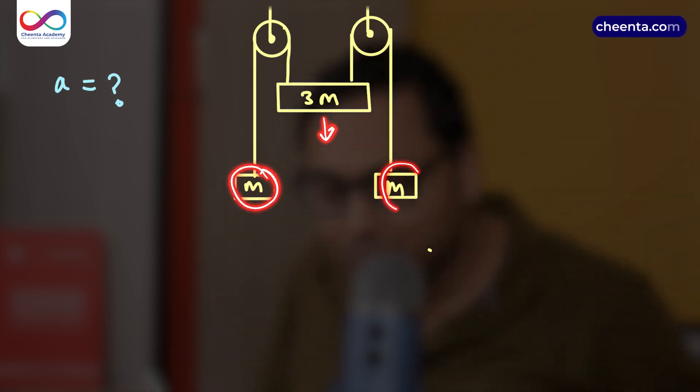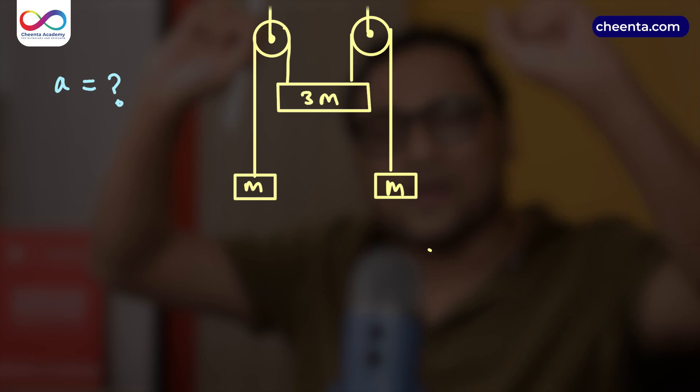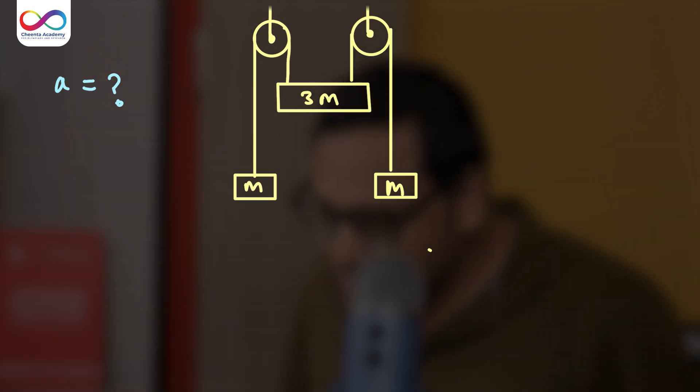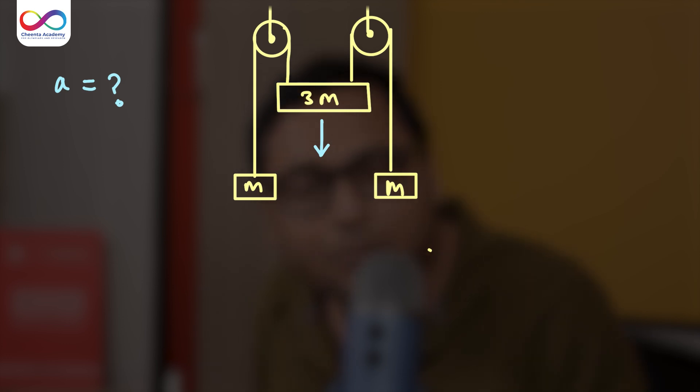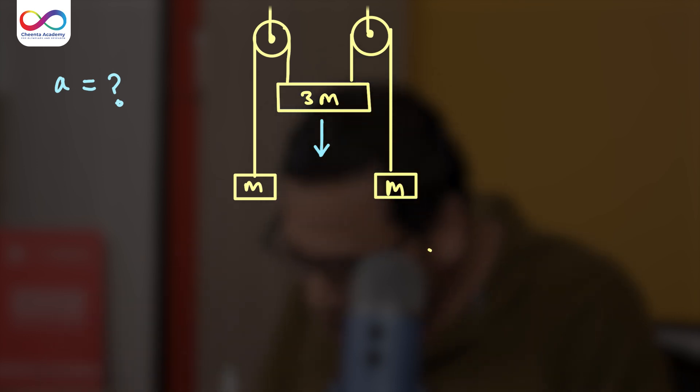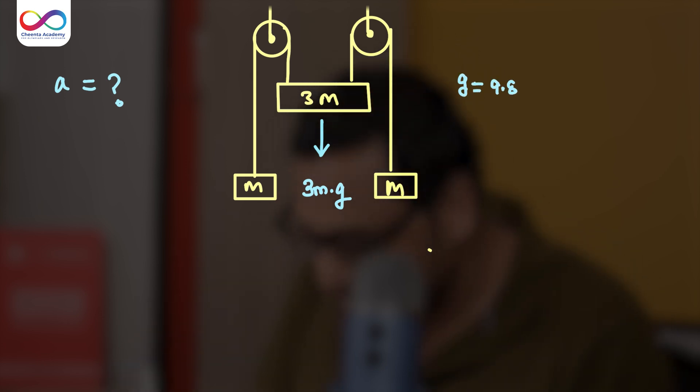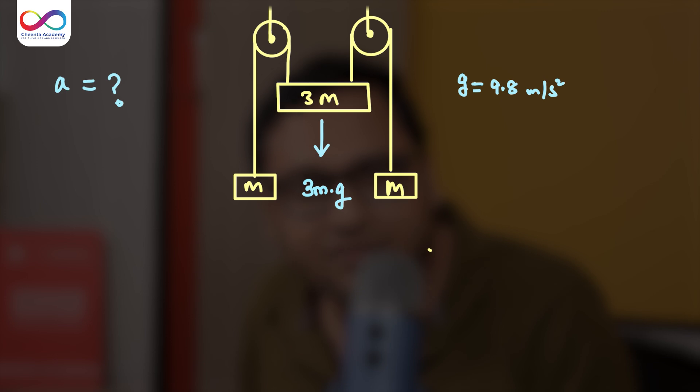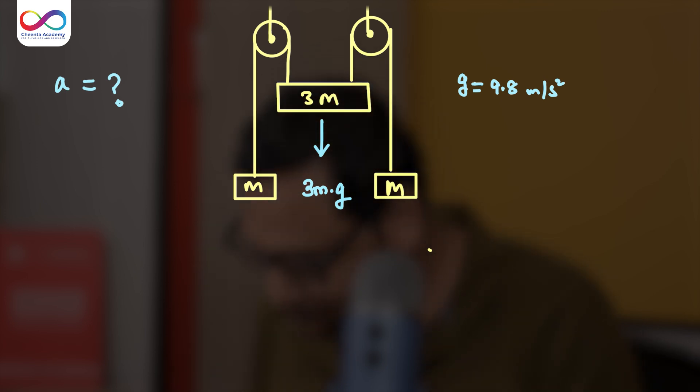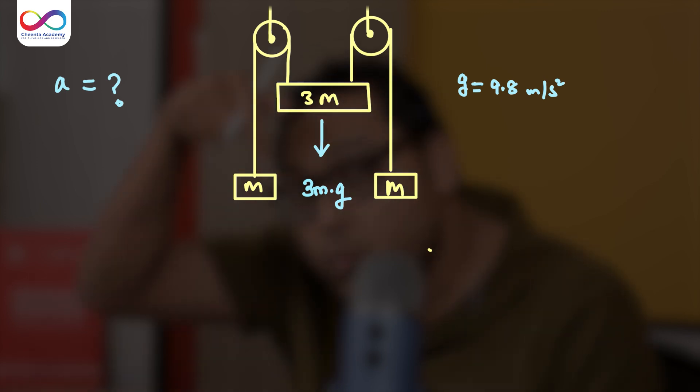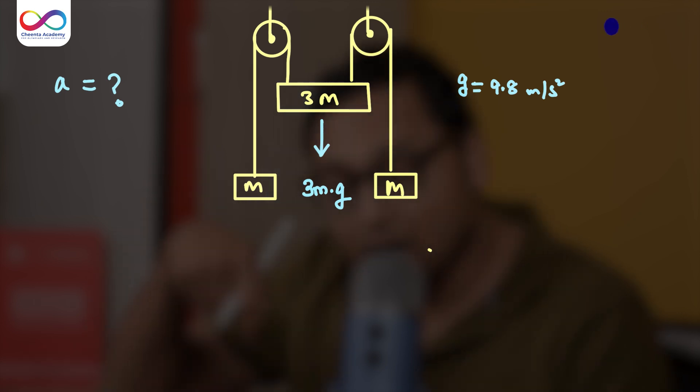And the body with mass M, bodies with mass M, are going up. So what is the downward force that is acting on the body with mass 3M? Well, it's mass into acceleration due to gravity, which is 3M times G. You can take the value of G as 9.8 meter per second square. It is not really that relevant for this particular problem. So that is one of the forces that is acting downward.